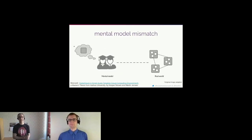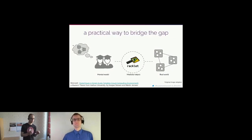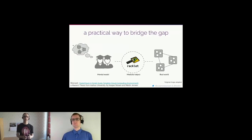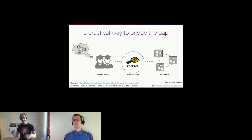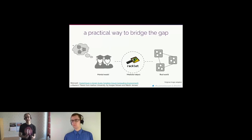When you learn about something for the first time, you often see it as a black box — you don't know what's inside or how it works. In reality, cloud is a system composed of many many components. As found in a master's thesis from Casper Nissen and Martin Jensen at Aarhus University in Denmark, they studied whether having something tangible — something you can touch and physically change — helps get full comprehension of large complex cloud-native systems. That's why we'd like to introduce Racklet, which is exactly this kind of mediator object.